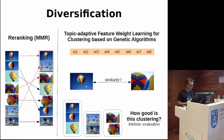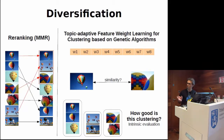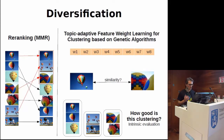For the diversification, there were two methods tested. On the left side, a re-ranking method followed the traditional maximal marginal relevance — MMR — approach, considering multiple features.